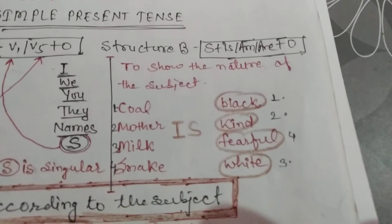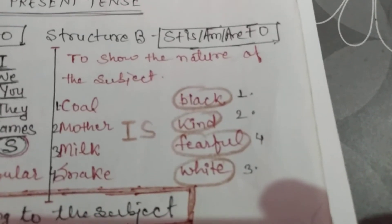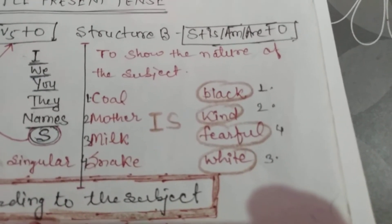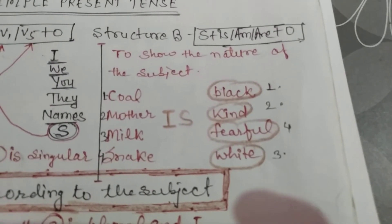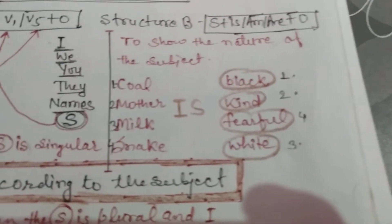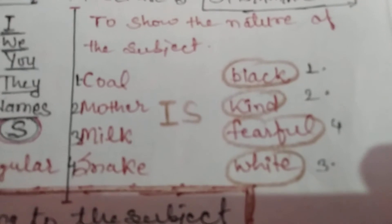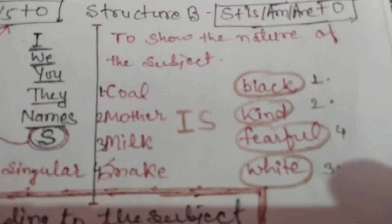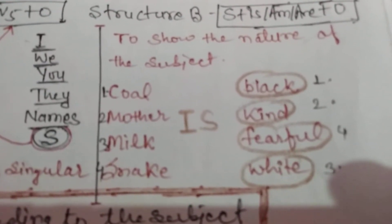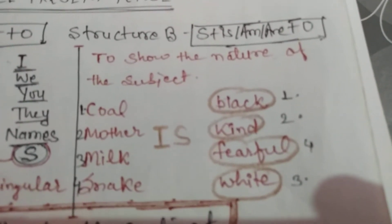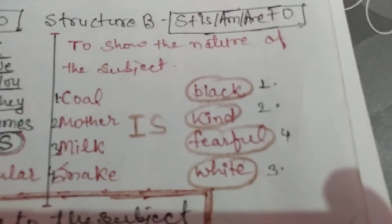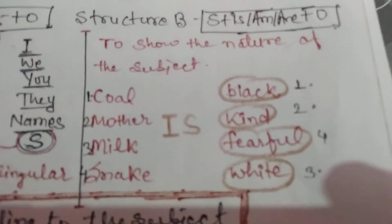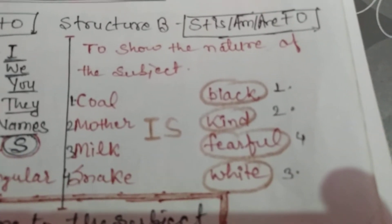Now we are coming to the next structure: Subject + is/am/are + Object. This is also called the structure of simple present tense. It is used to show the nature of the subject. Here you can see 'is/am/are' highlighted, and examples: coal, mother, milk, and snake as subjects.